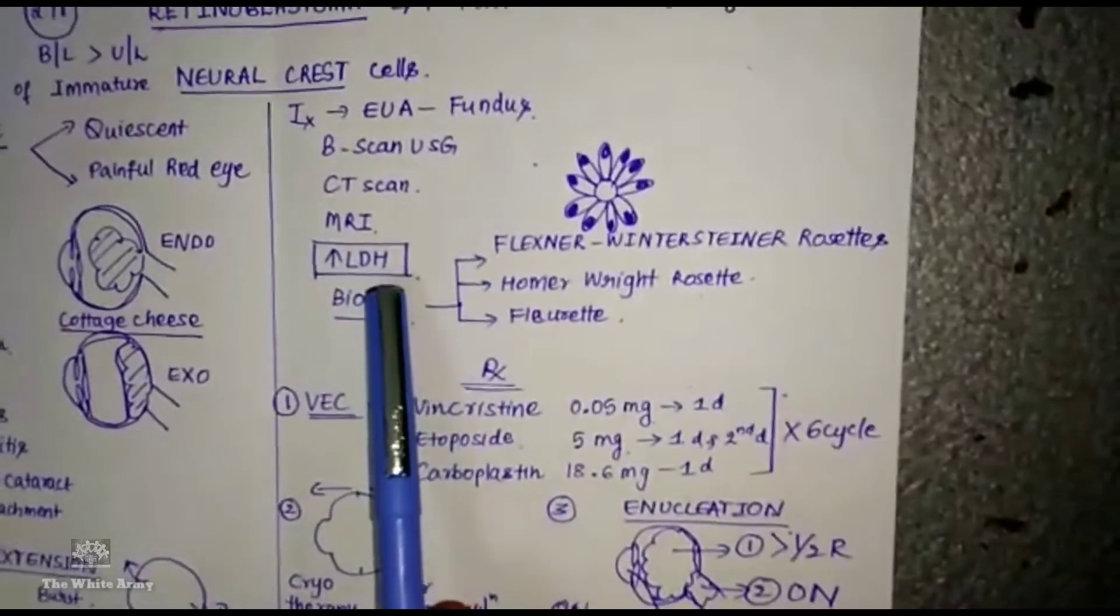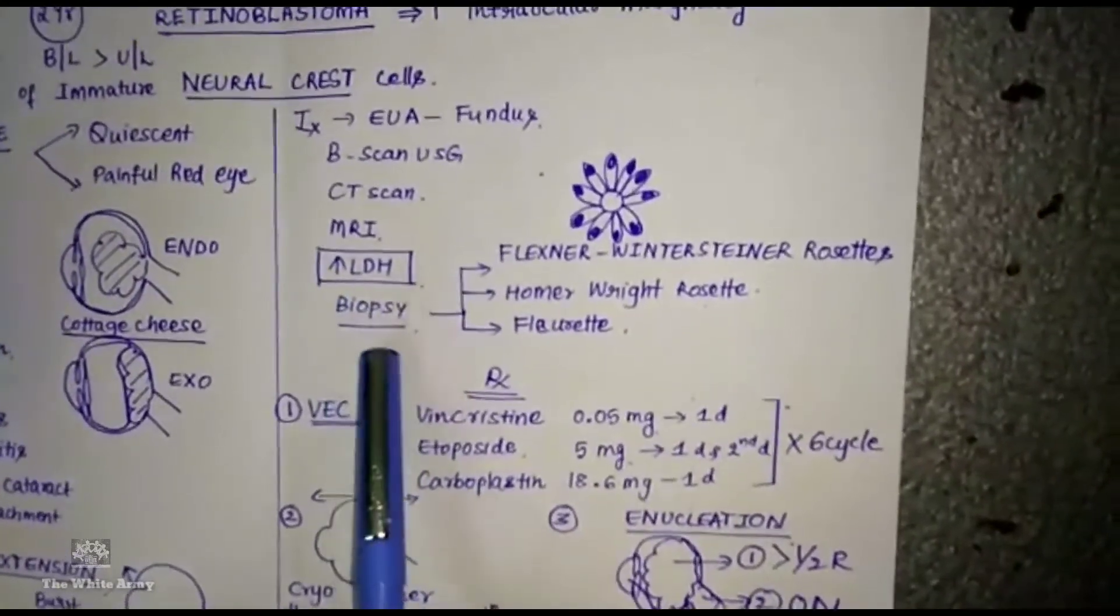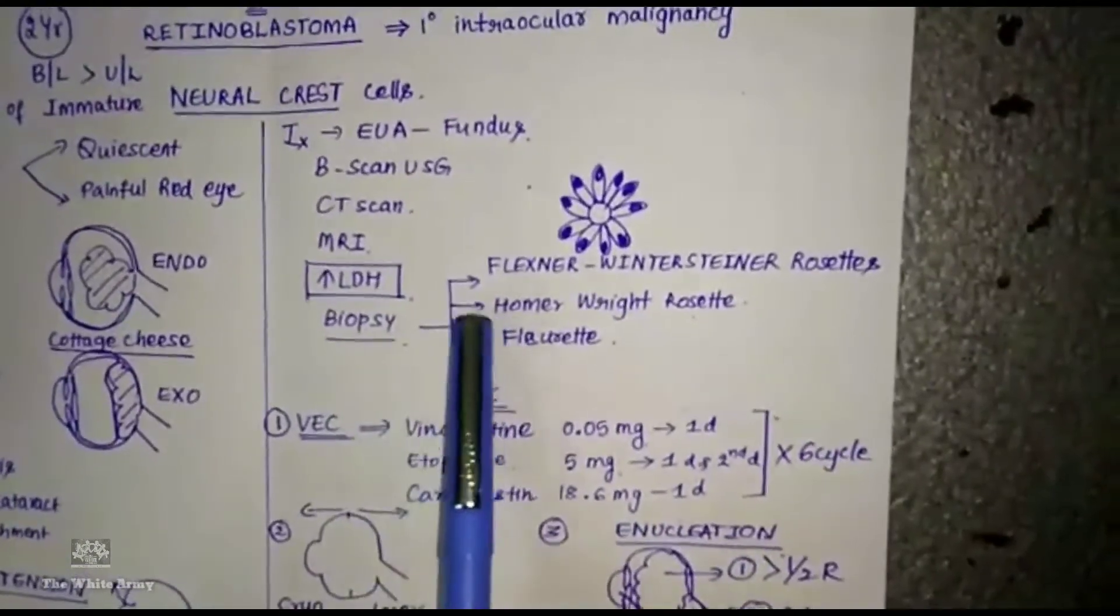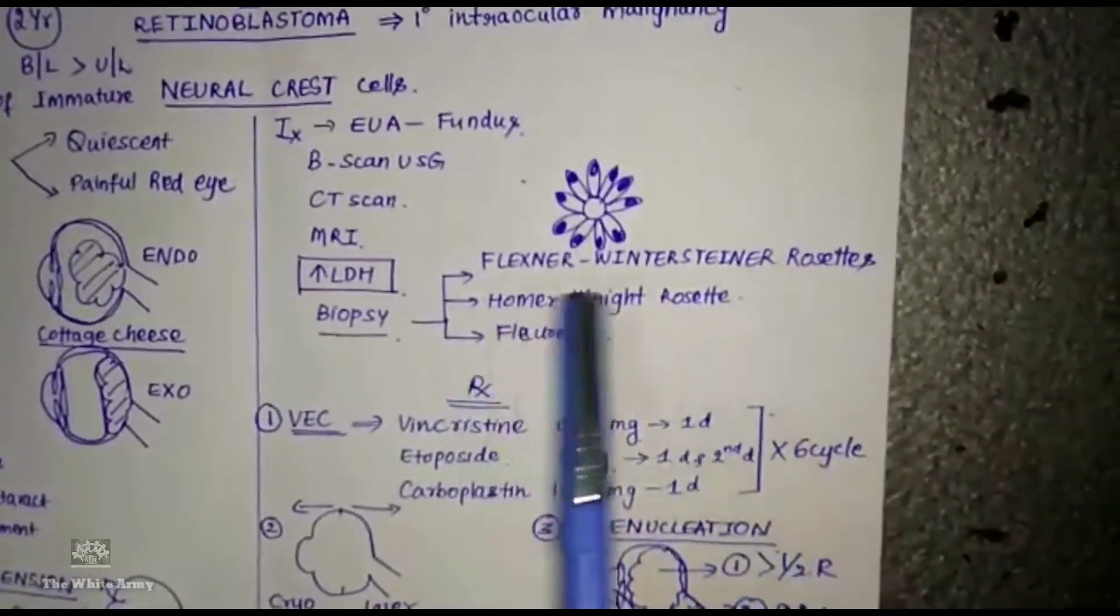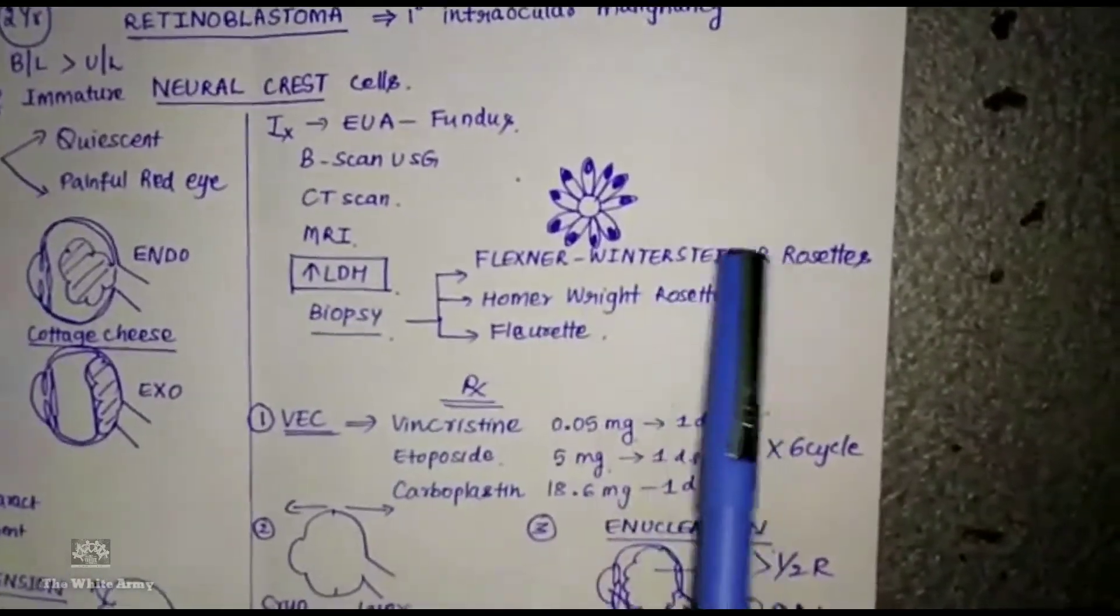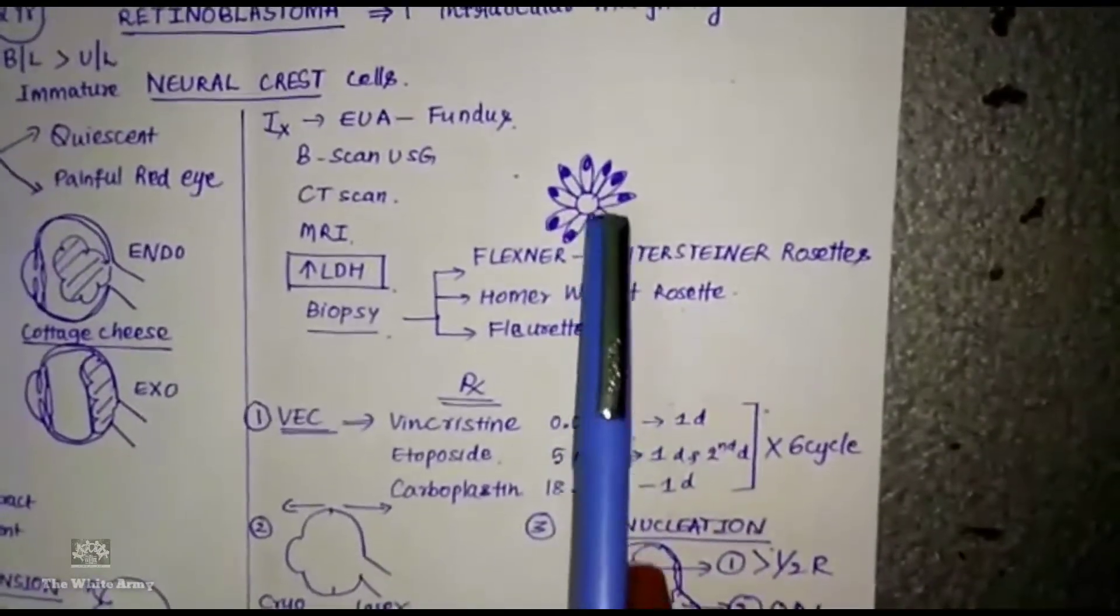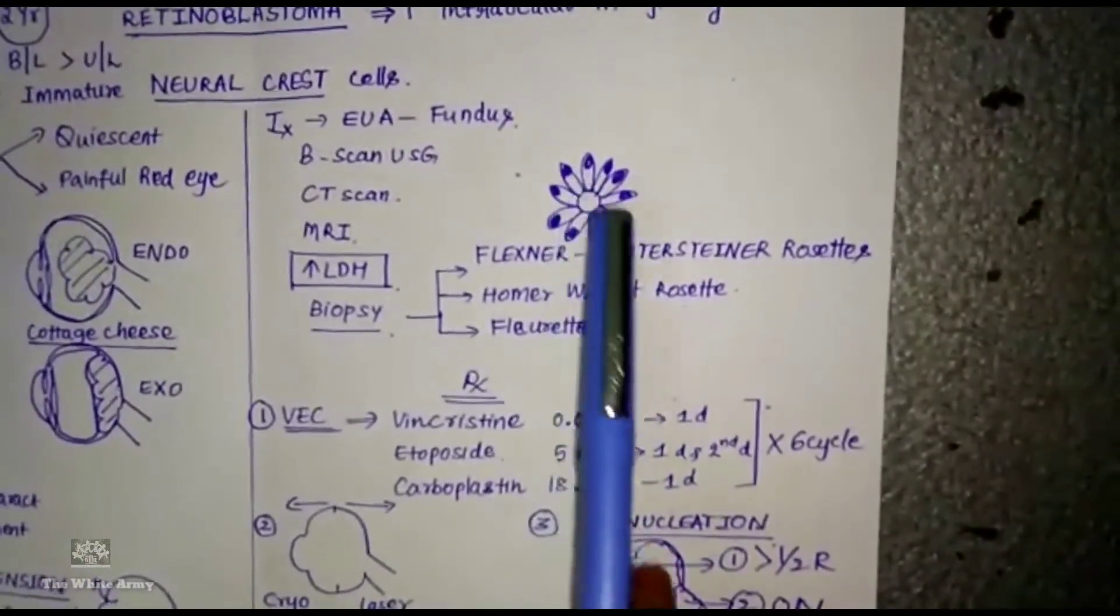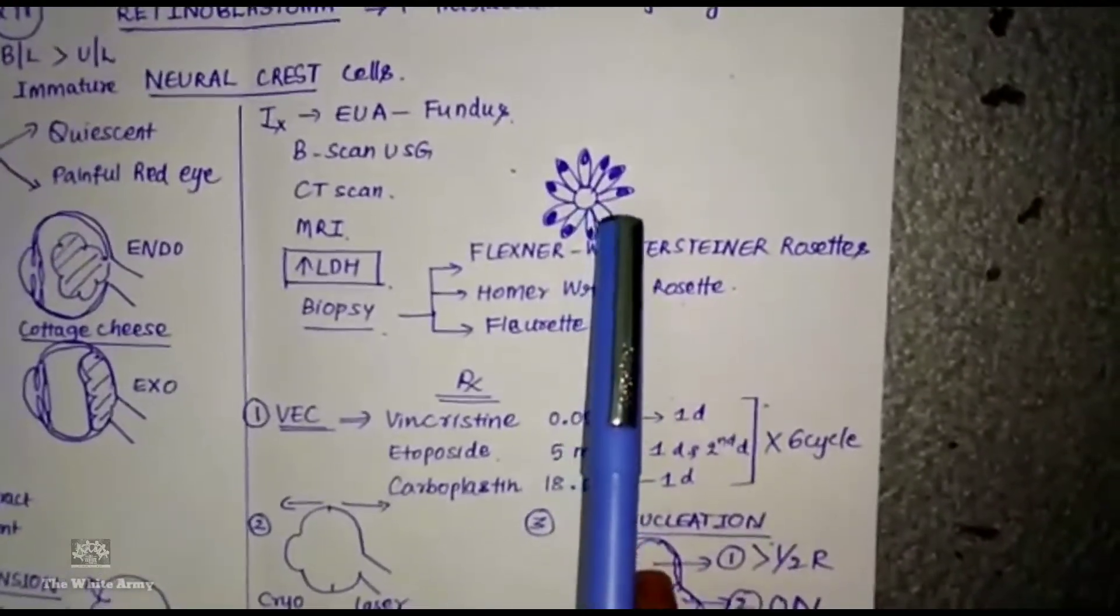In the aqueous humor there will be increased lactate dehydrogenase. When you do biopsy you will get three characteristic features: Flexner-Wintersteiner rosettes, Homer-Wright rosettes, and fleurettes. In Flexner-Wintersteiner rosettes you will have central lumen surrounded by tumor cells with tumor nuclei away from the center of the lumen.